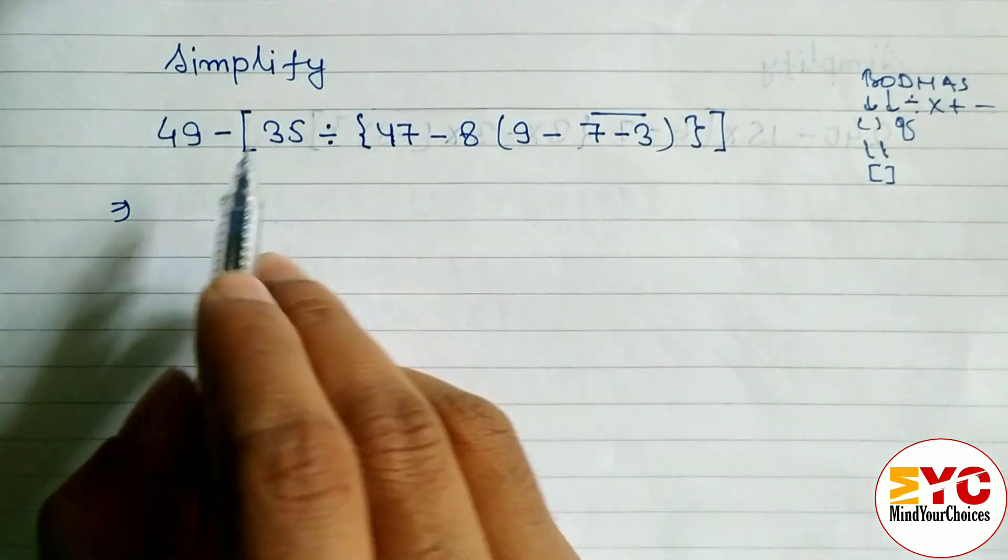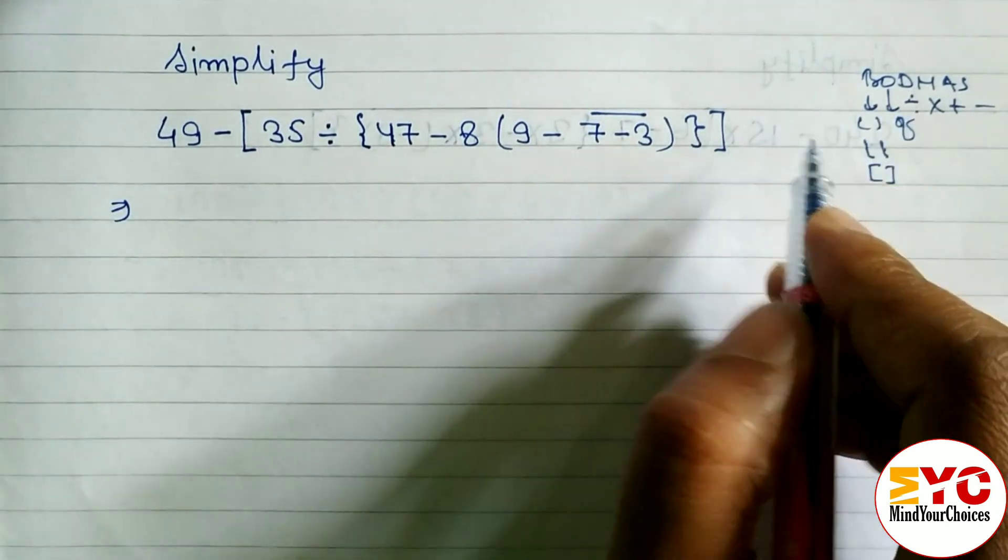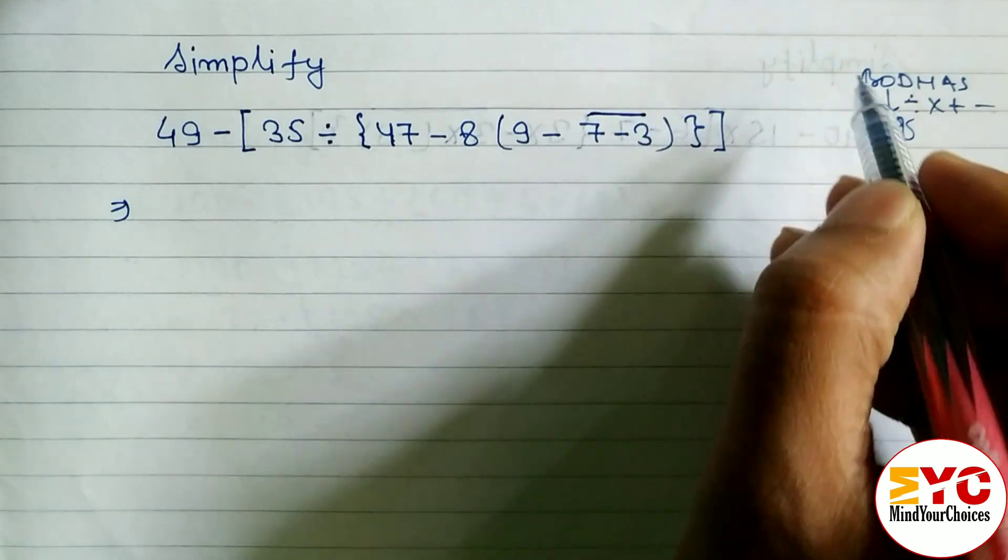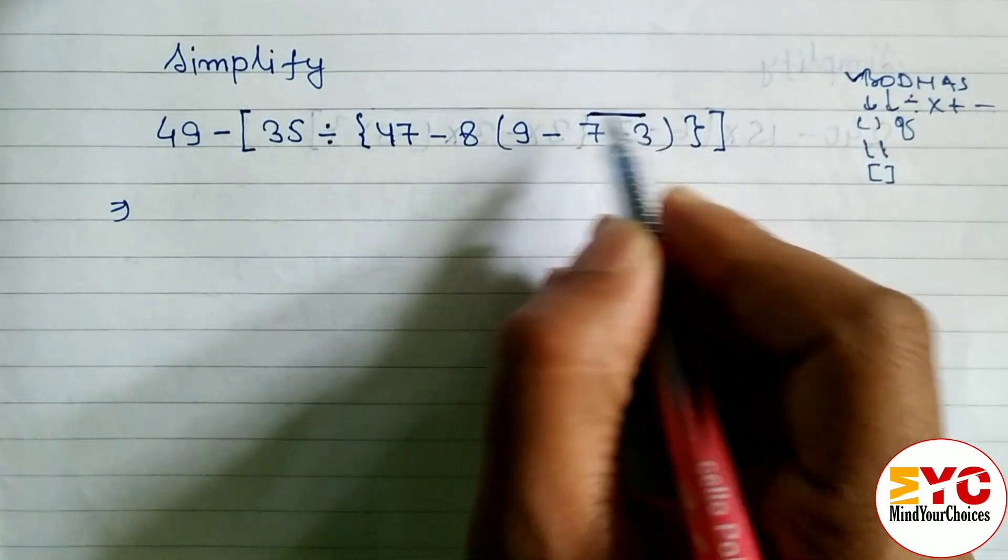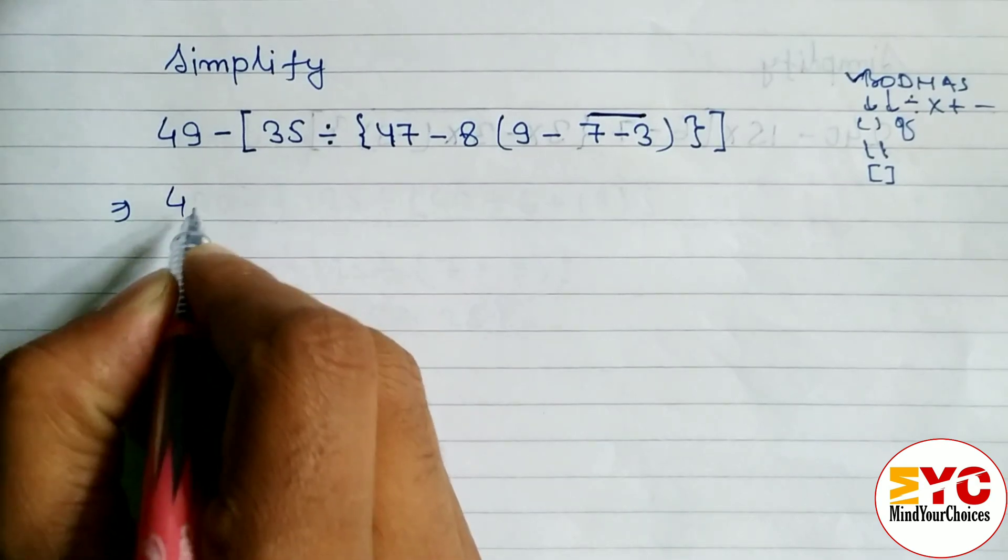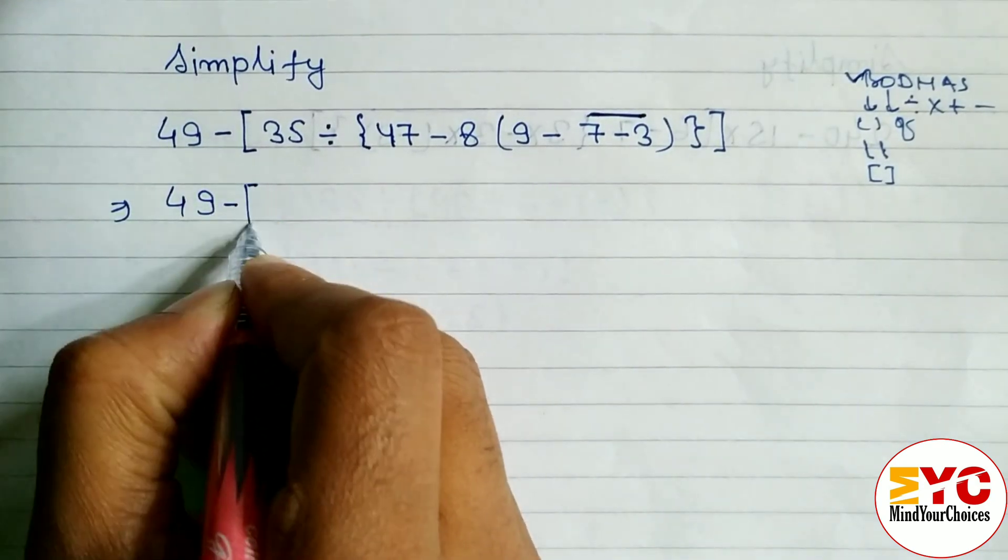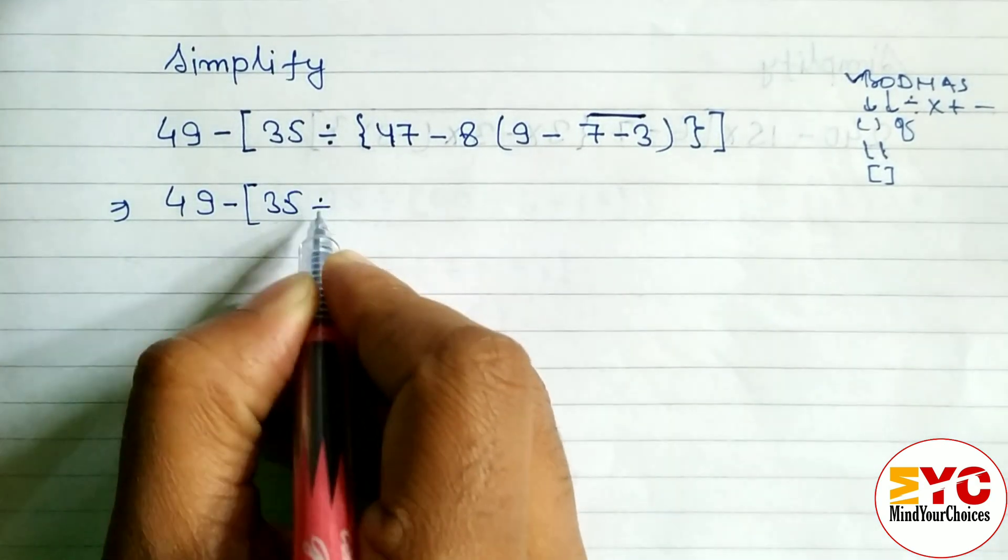You can see here we have a small bracket, curly bracket, and big bracket. But before the brackets, there is this bar. So we have to use this bar first, then only we can go to the further process. 49 minus 35 divide...